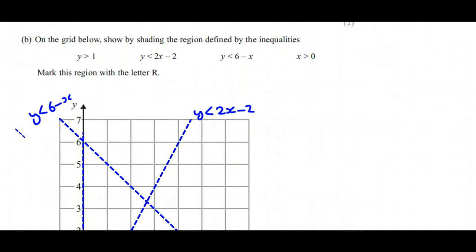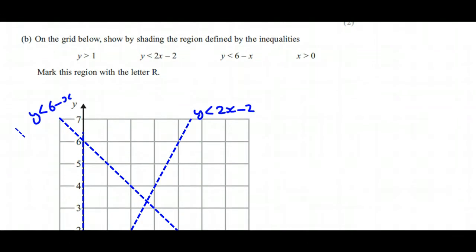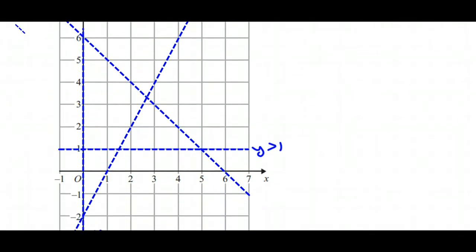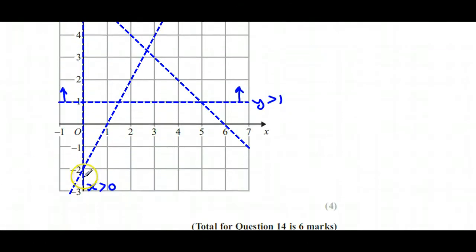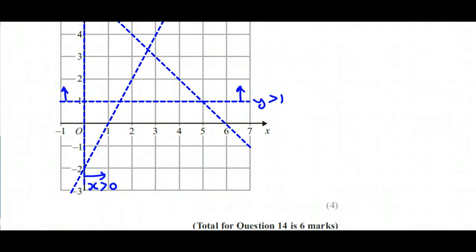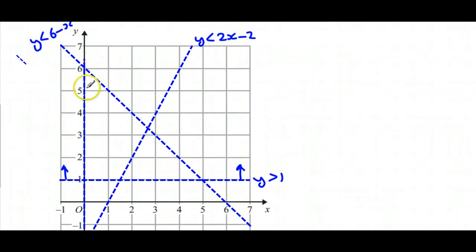Now it says by shading the region defined by the inequalities, so which region satisfies all of those? For y > 1, that's anything in this direction, and for x > 0, that's anything in this direction. So far it would be anything in this sort of region here.